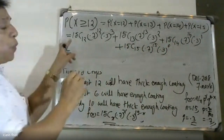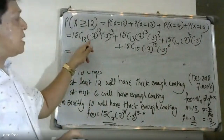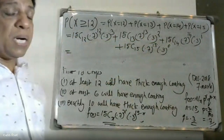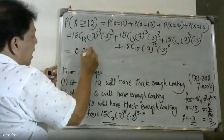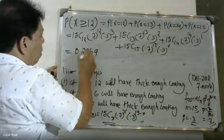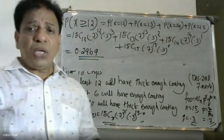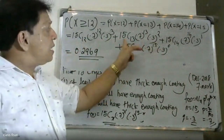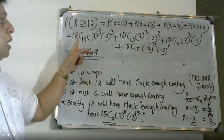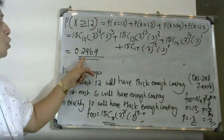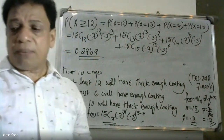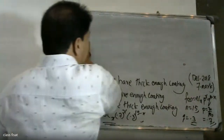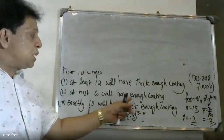After calculating all four terms and summing them, the result for P(X≥12) is approximately 0.2969. This completes the first part of the question — at least 12 chips will have thick enough coating with probability 0.2969.